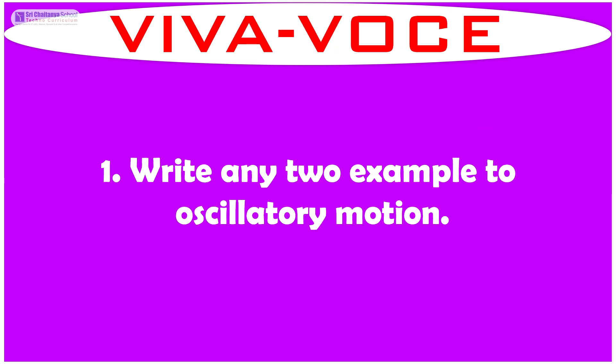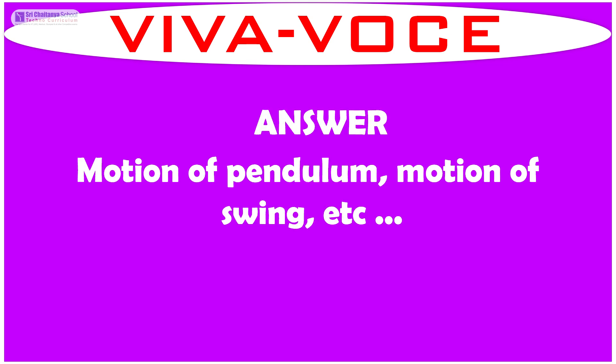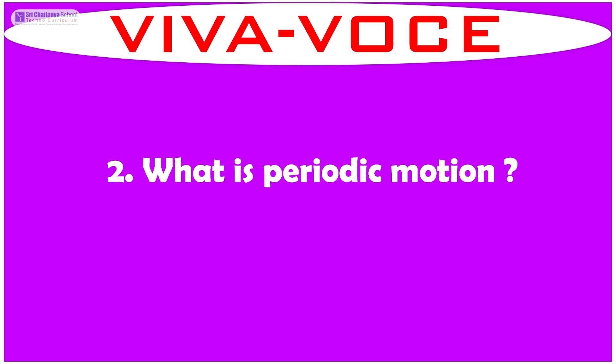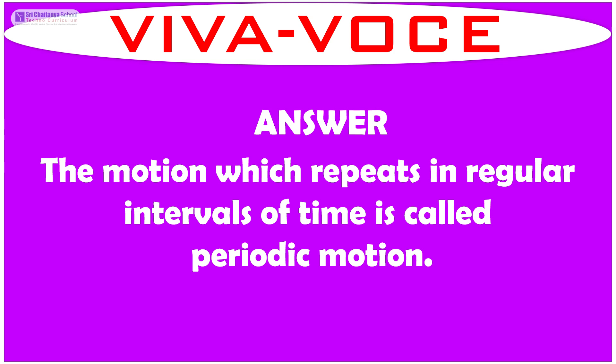Based on this experiment, I will ask a few questions. Write any two examples of oscillatory motion. The answer is: motion of a pendulum, motion of a swing, and so on. The second question is: what is periodic motion? The motion which repeats in regular intervals of time is called periodic motion.